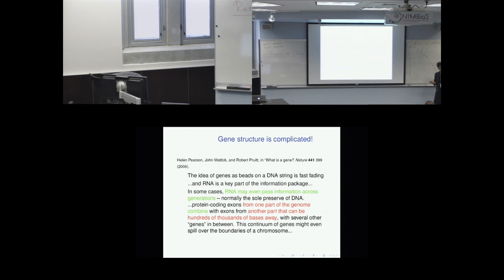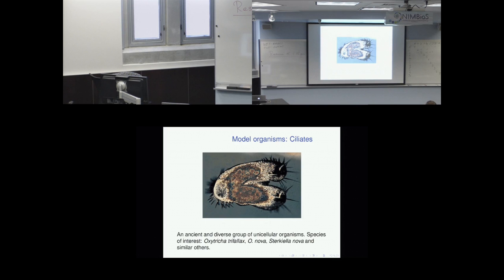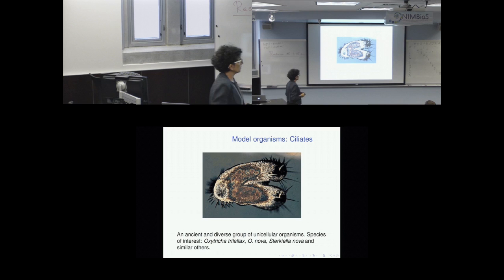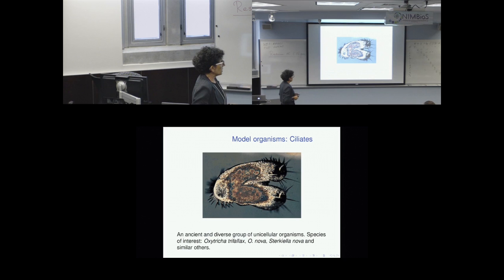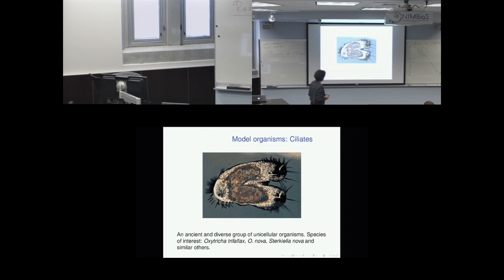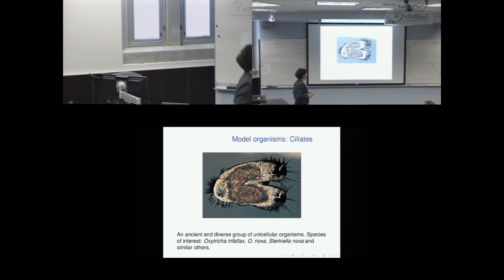This is the basis of alternative splicing. We started getting interested in DNA rearrangement, and we are studying this little organism. There are several species of ciliates that undergo massive rearrangements during their development. It's a single-cell organism. We have very extensive data in Oxytricha trifallax, but there is also quite a bit of data on Oxytricha nova and Sterkiella nova.